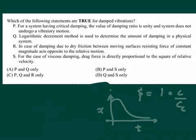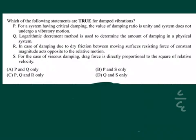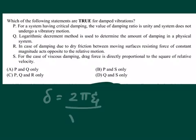Then the second one: logarithmic decrement method is used to determine the amount of damping in a physical system. As I already told, this is described in detail. Logarithmic decrement is given by 2πζ divided by √(1 - ζ²), where zeta will be my c by cc.